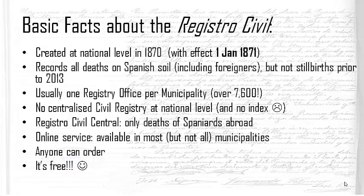Not only is there no index at national level in Spain — which would certainly make research much easier — but there is also no single centralised civil registry office. The civil registry system in Spain is allocated per municipality. Not every municipality has a civil registry office, but it is mostly the case, and bearing in mind that there are over 7,600 municipalities in Spain, you can imagine how many registry offices that means.